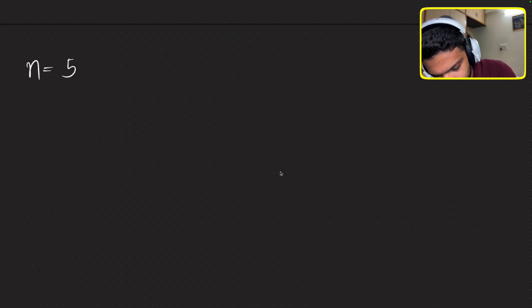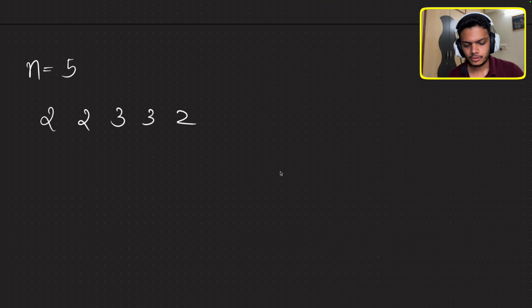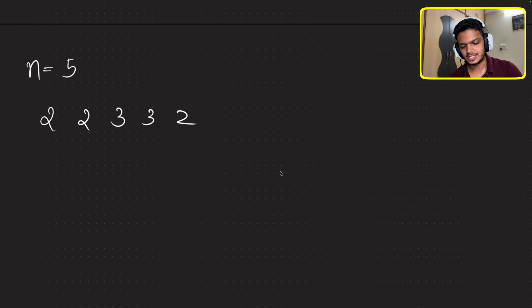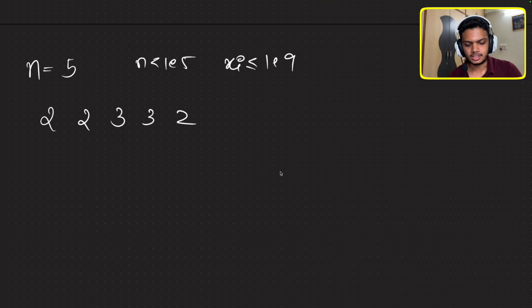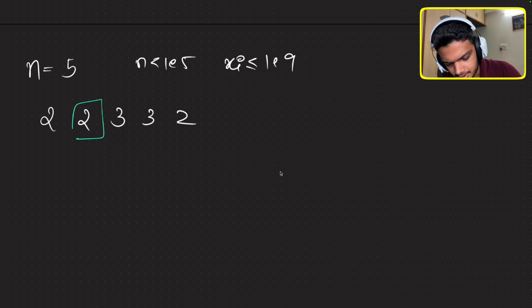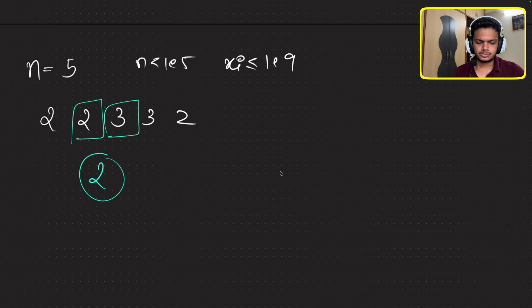Let's take an example: say n was 5 and we were given elements 2, 2, 3, 3, and 2. What you have to return is the number of distinct elements in this list. n is as high as 1e5 and xi is as high as 1e9. In this example, there is one distinct 2 and one distinct 3, so we output 2.